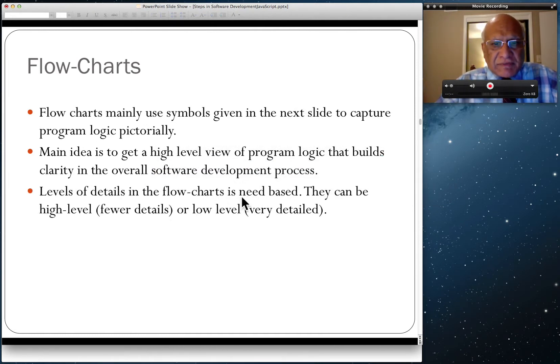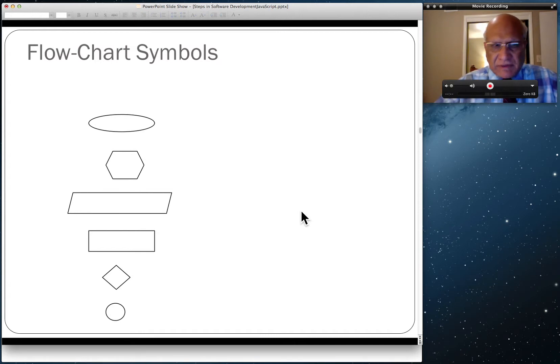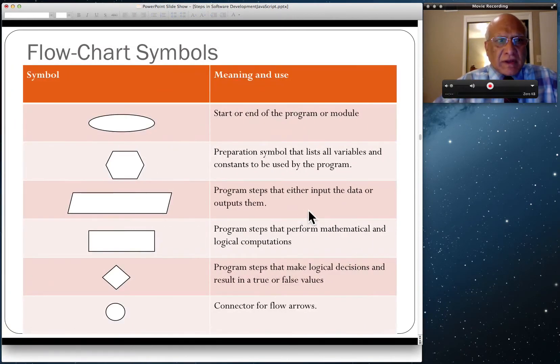The level of detail in flowcharts is need-based. They can be high level, meaning fewer details, or low level, meaning a lot of detail. These are the flowchart symbols. This column shows symbols and this column shows their meaning and use. Ellipses are used to start or end a program or module.